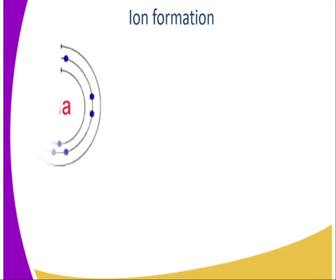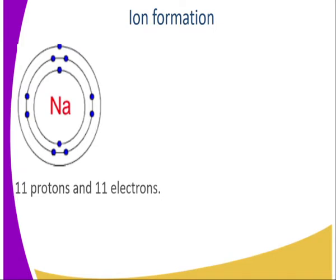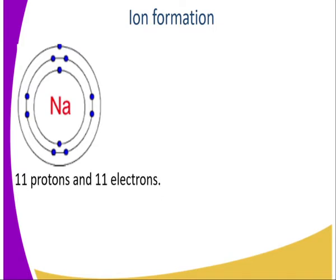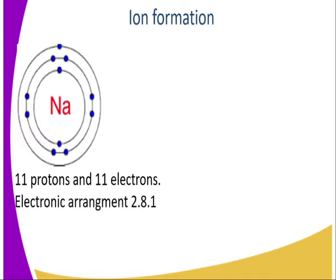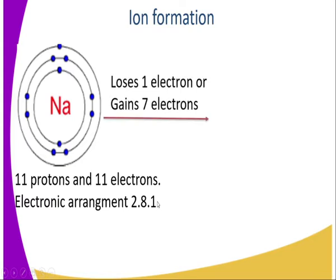We also have other atoms — for instance sodium. Its electronic arrangement can be derived from its atomic number: it has 11 protons and 11 electrons, so we get the electronic arrangement or configuration to be 2,8,1 — that is two electrons in the first energy level, eight electrons in the second energy level, and one electron in the outermost energy level.